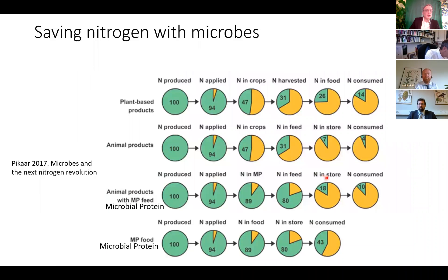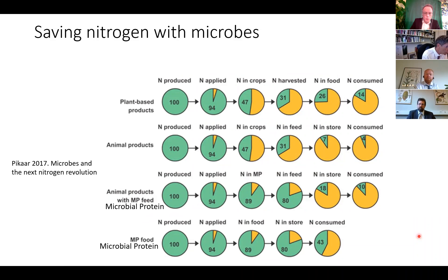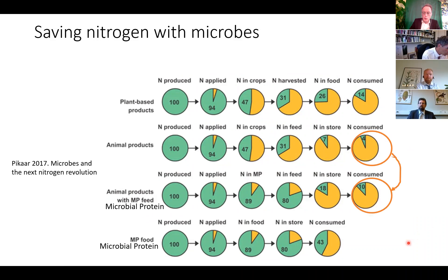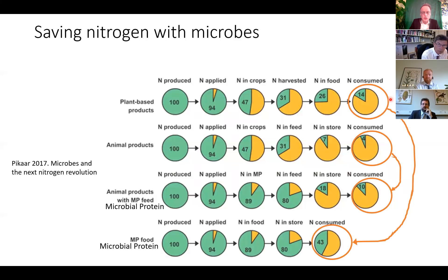So we can save a lot of nitrogen with microbial protein. Looking at the two value chains again: for the animal product value chain using microbial protein, we can improve nitrogen efficiency from 4% to 10% — quite substantial for the final product. With the human food value chain, we can triple the nitrogen efficiency.